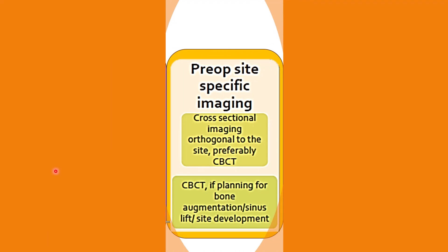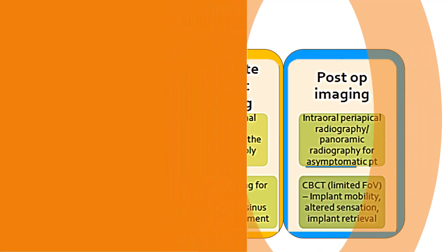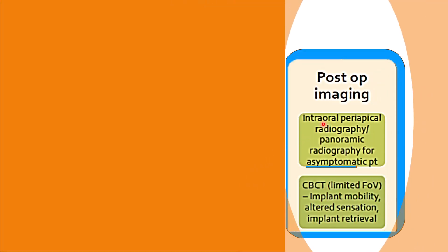The radiographic examination of any potential site for a dental implant should include cross-sectional imaging — the CBCT scan — if placing any bone graft, bone augmentation, sinus lift, evaluation of prior trauma, or assessment of impacted teeth in the area of interest; CBCT must be taken. In the postoperative step, after placing the dental implant, if there is an absence of any clinical sign or symptom — for an asymptomatic implant — an intraoral periapical radiograph or panoramic radiograph can be used.